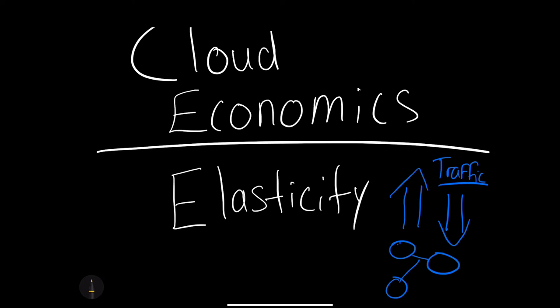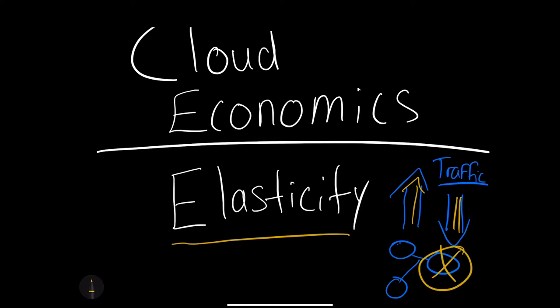Let's dive into cloud economics and in particular this term: elasticity. Elasticity means that your company has some web servers, and if the traffic goes up you can respond by automatically getting a new virtual machine — or two or four. Likewise, if the traffic goes down, you can put away those virtual machines and not have to physically purchase them. That's what the elasticity concept is: scaling up and down according to demand.